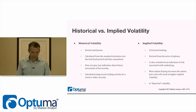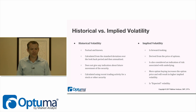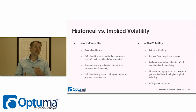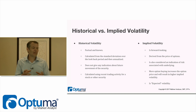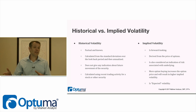Basically, over the look-back period — let's make it 21 days for one month — we look back over that period, calculate the standard deviation, and then annualize that number. So historical volatility and implied volatility are both annualized numbers. That means if conditions remain the same over the whole year, this is how much we'd expect the security to move either up or down.